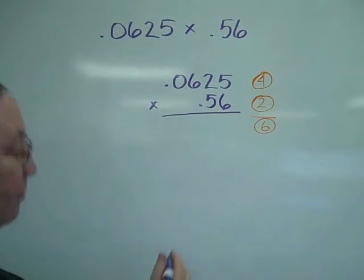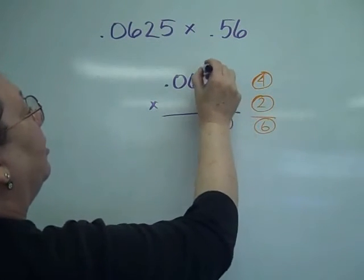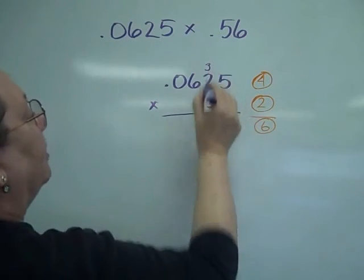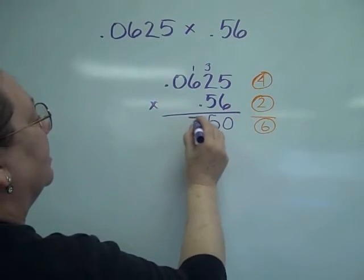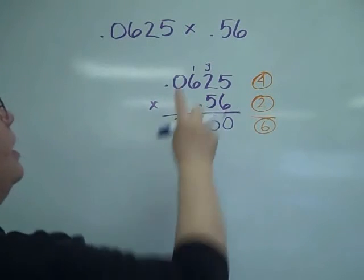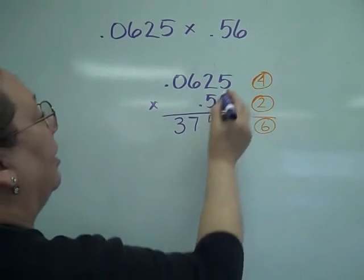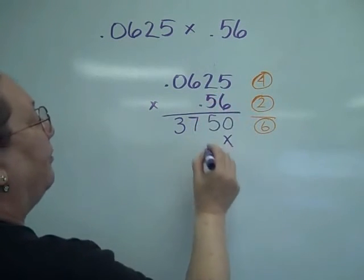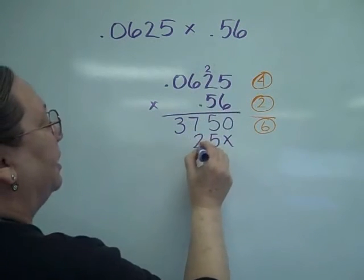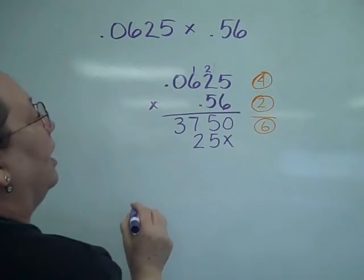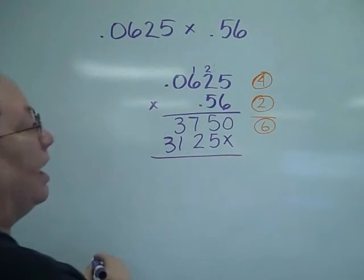So going ahead and multiplying it, I've got 5 times 6 is 30, carry my 3. Twelve plus 3 is 15, carry 1. And 36 plus 1 is 37. I'm going to take away my carrying and start again. Remembering, move over one. Five times 5 is 25. Ten plus 2 is 12, carry 1. And 30 plus 1 is 31.